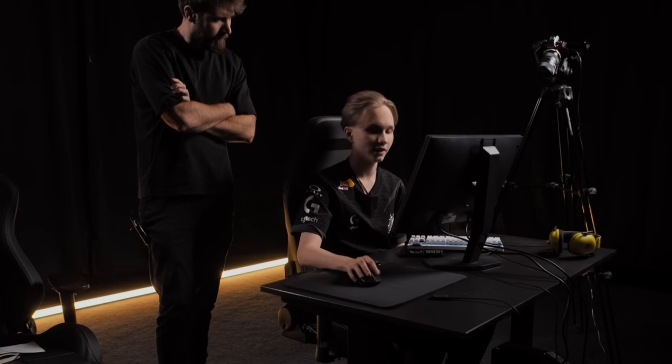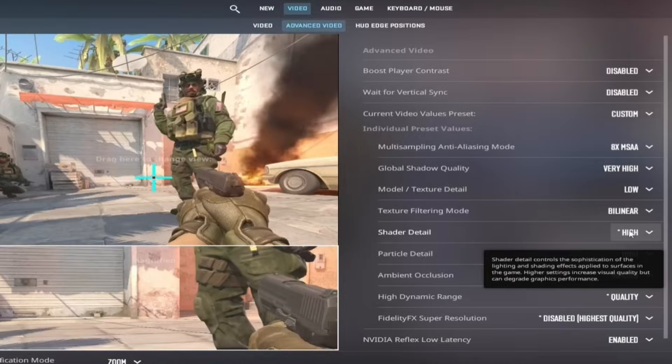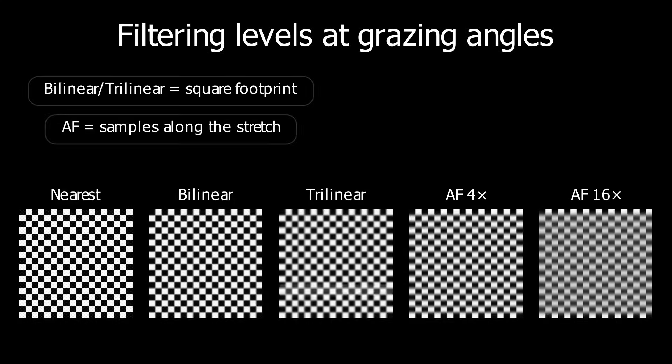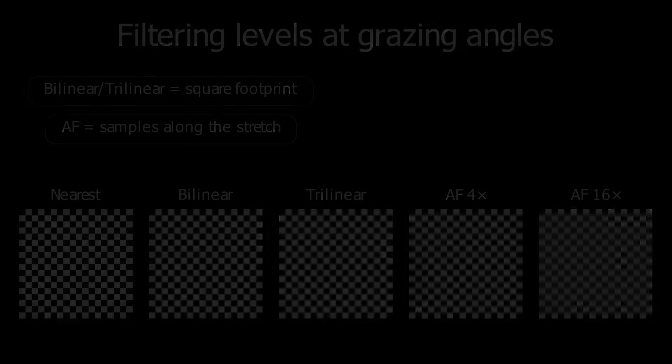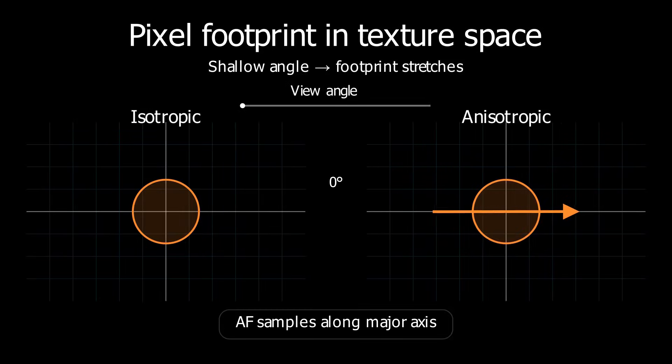Every time a pro changes a graphics setting, half the player base just copies it, and the other half says it's placebo. Anisotropic filtering is exactly one of those settings. So today, we're not arguing — we're just testing performance, input lag, and visibility in CS2.